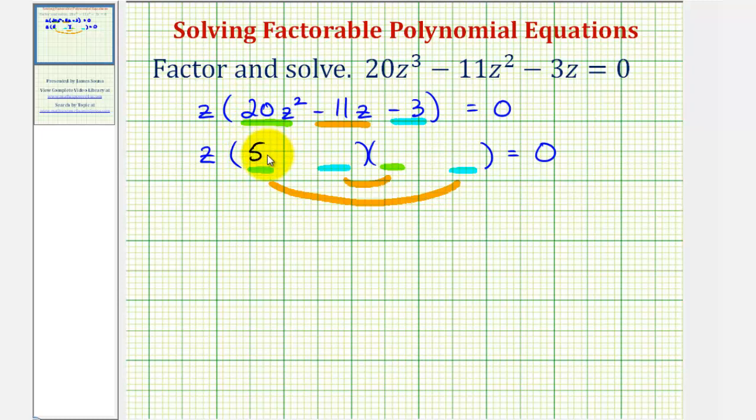So we'll have a factor of 5z here, a factor of 4z here. Notice this product would give us 20z squared.